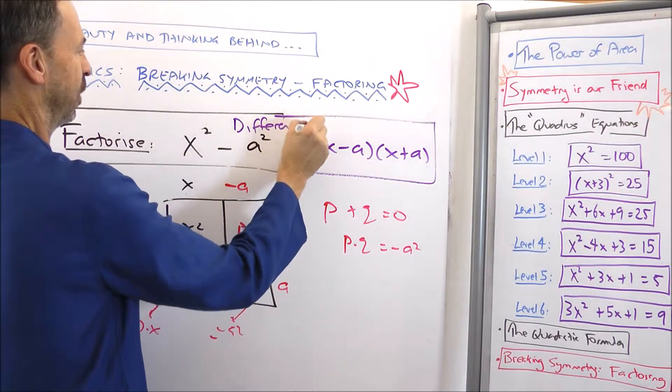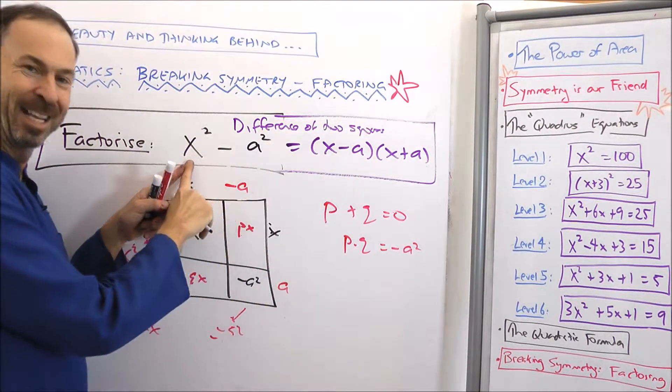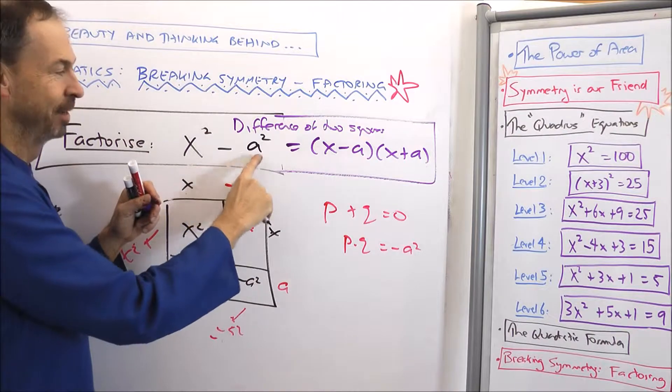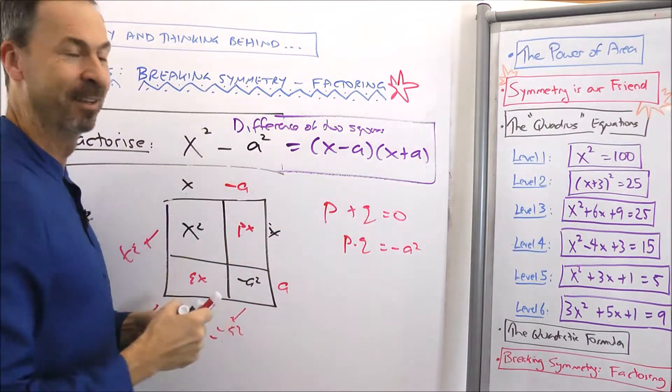This is a very famous formula in mathematics. It's called the difference of two squares. The difference of two squares formula. Because what have I done? x squared, a square number. Take away difference, a squared, square numbers. The difference of two squares turns out to always factor this way.